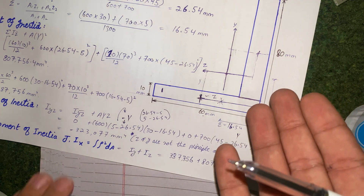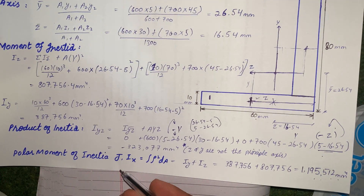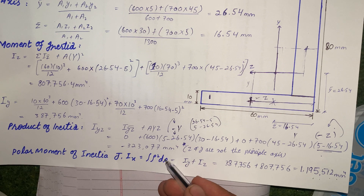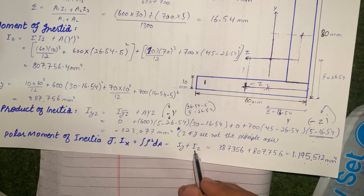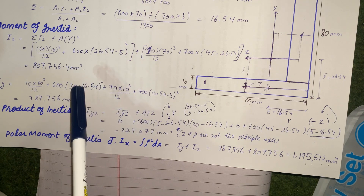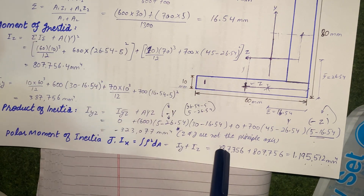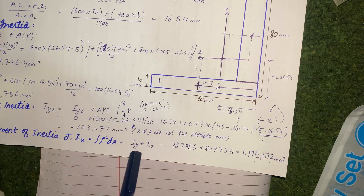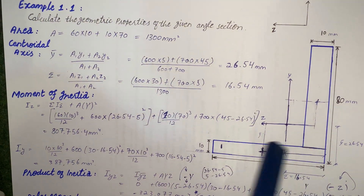Finally, we calculate the polar moment of inertia, also written as J, which is the moment of inertia about the x-axis (out-of-plane axis). Its formula is J = ∫ρ² dA, which equals Iz + Iy — the sum of the two rectangular moments of inertia about z and y axes. Adding the previously calculated Iz and Iy values gives the final polar moment of inertia J.